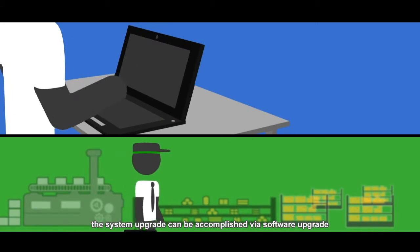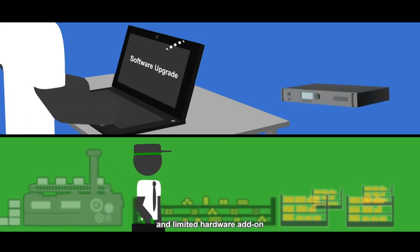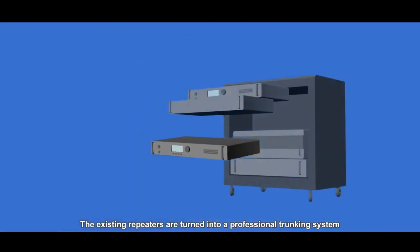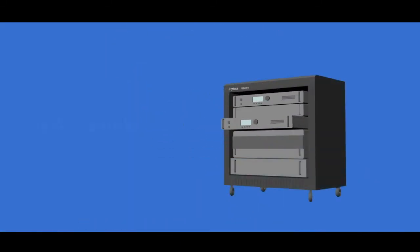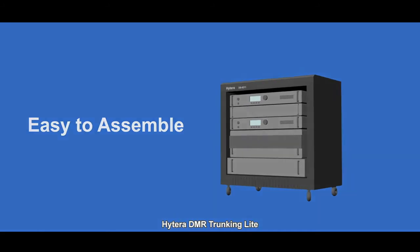The system upgrade can be accomplished via software upgrade and limited hardware add-on. The existing repeaters are turned into a professional trunking system: Hytera DMR trunking light.